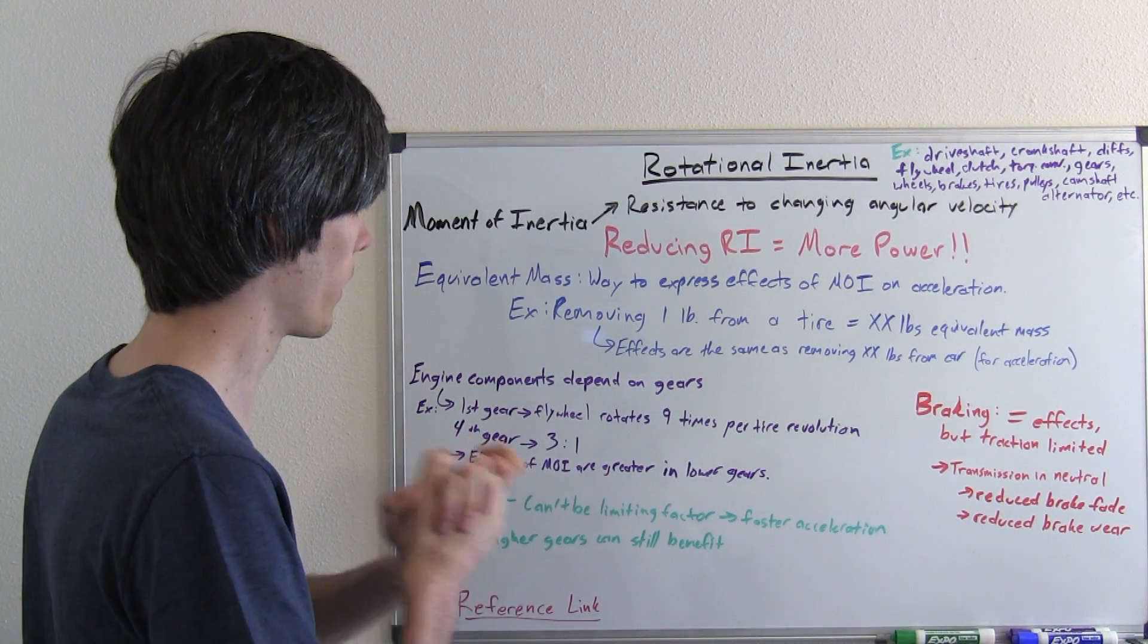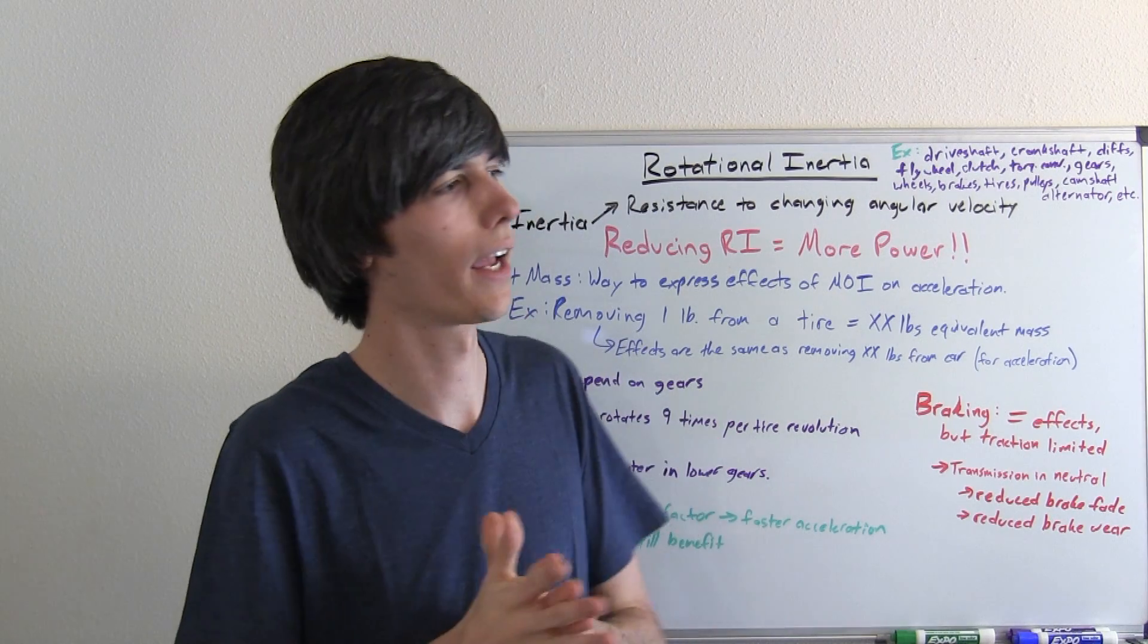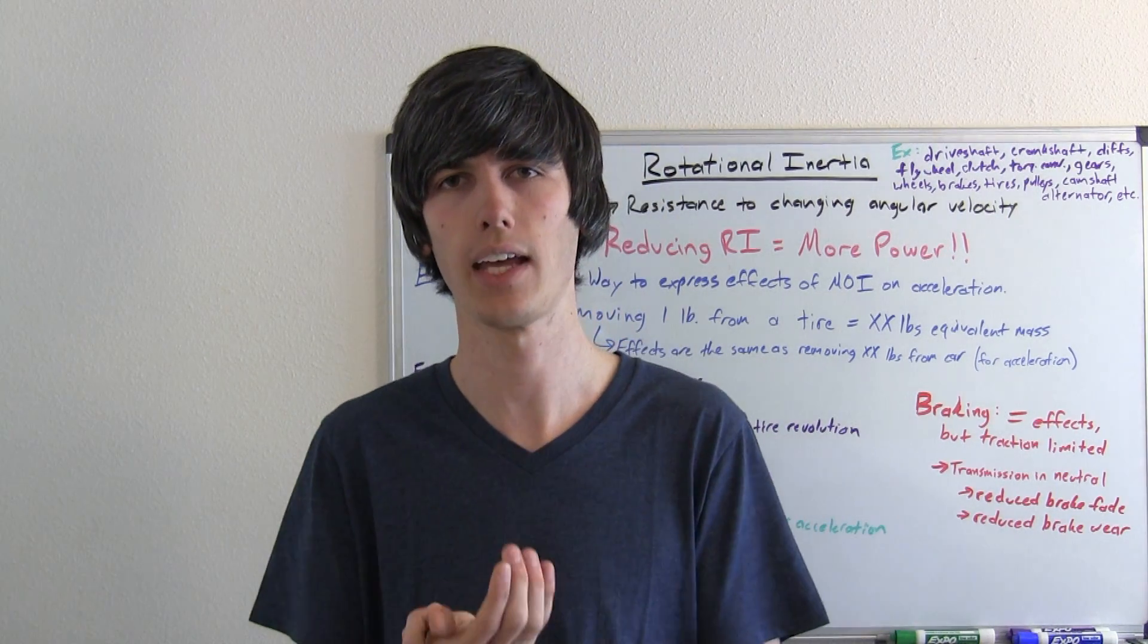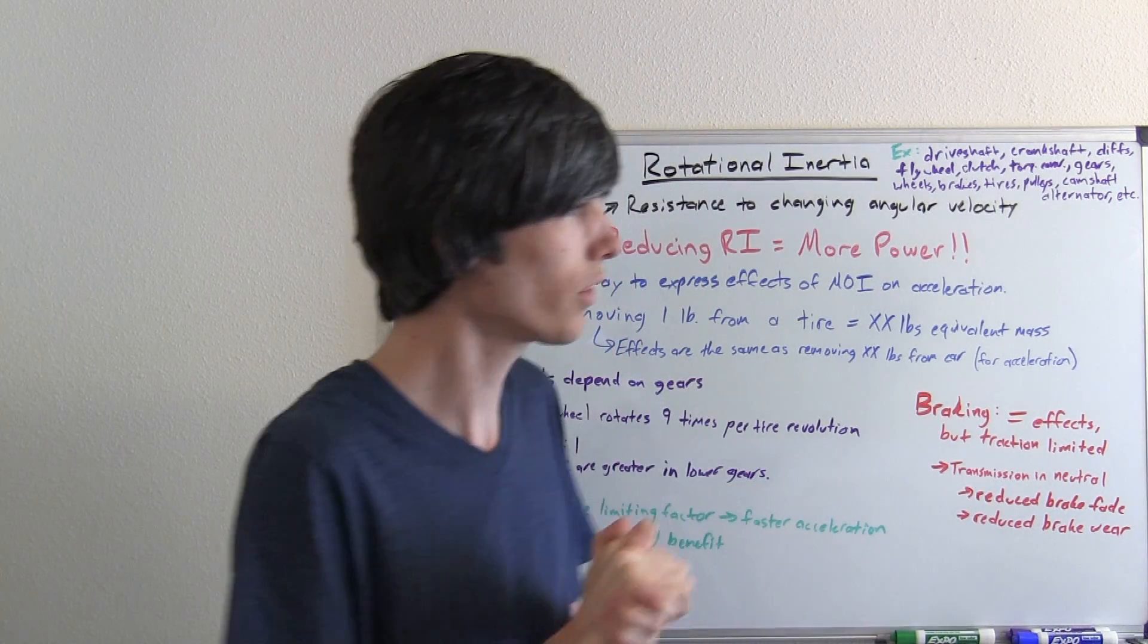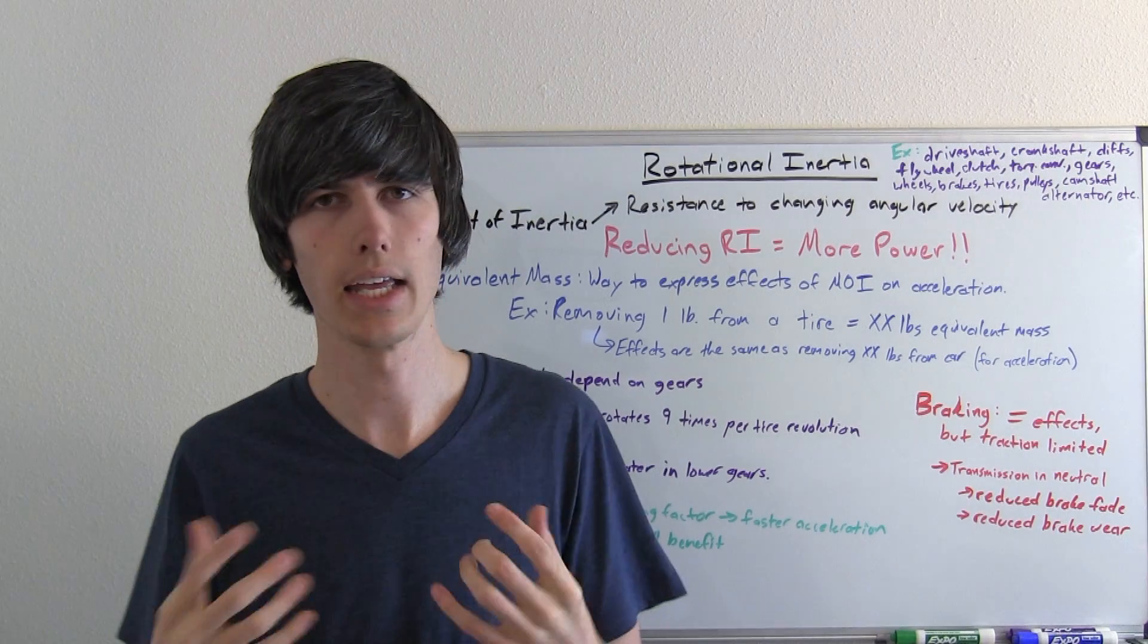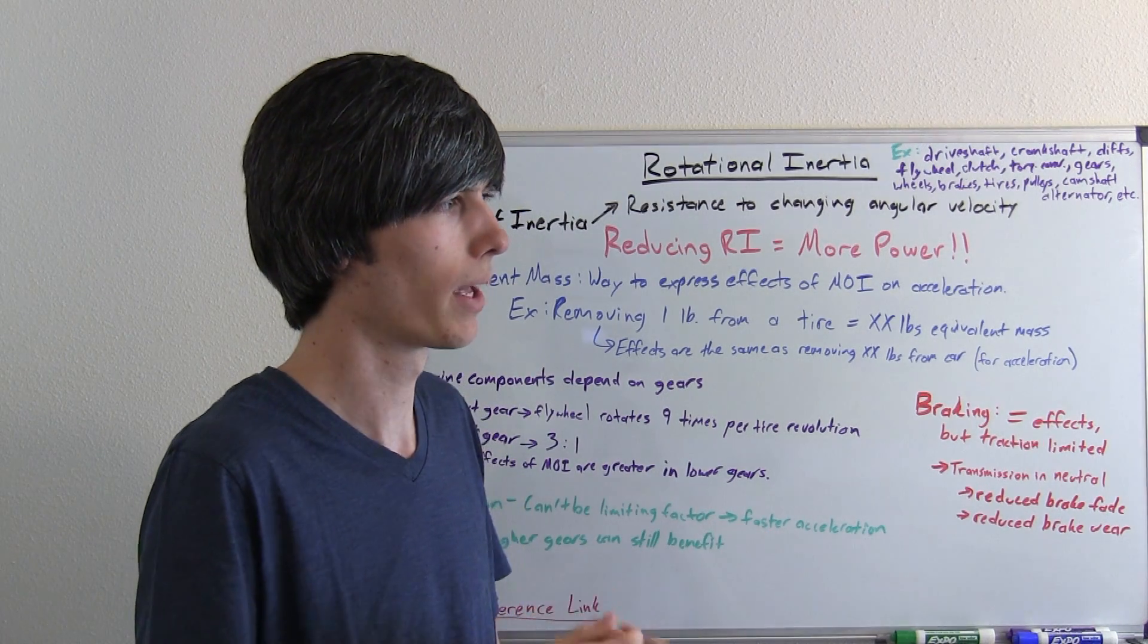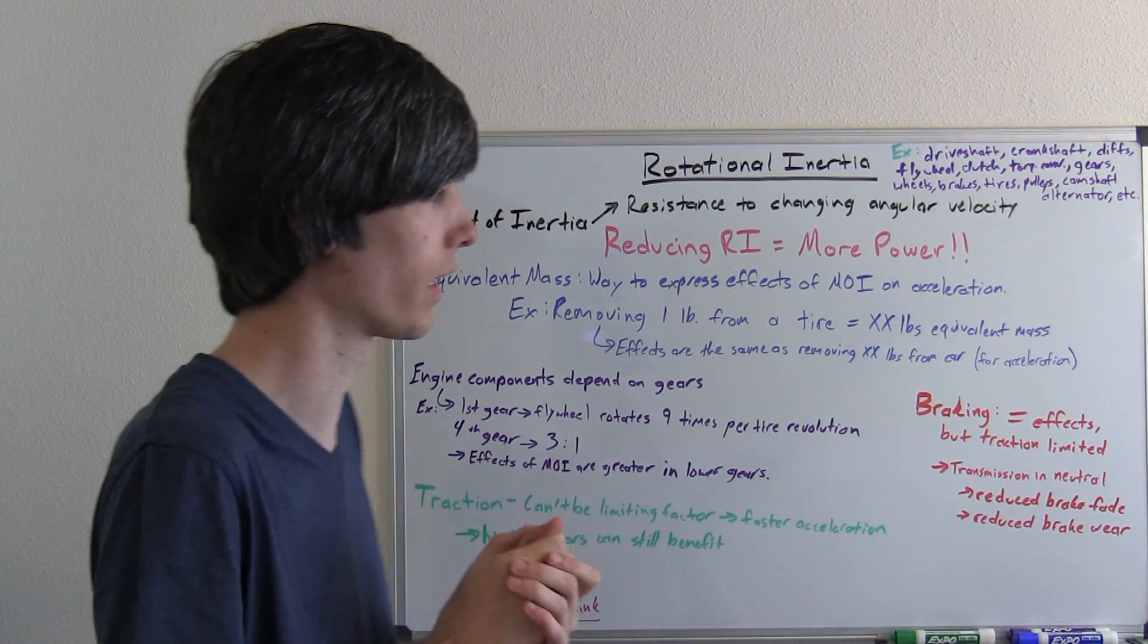Now, another thing is how does rotational inertia affect braking? And the real answer is it would be the exact same, assuming that traction wasn't the issue. So theoretically, if your car can't stop at maximum grip and your brakes aren't powerful enough to stop your tires from moving, then by reducing rotational inertia of these components like your brake discs, your wheels, things like that, then you are going to increase your stopping or decrease your stopping distance.